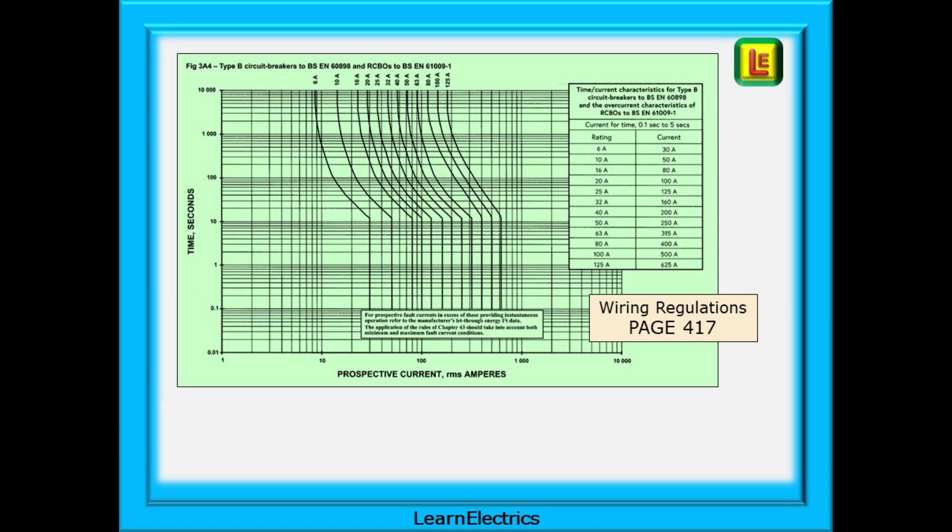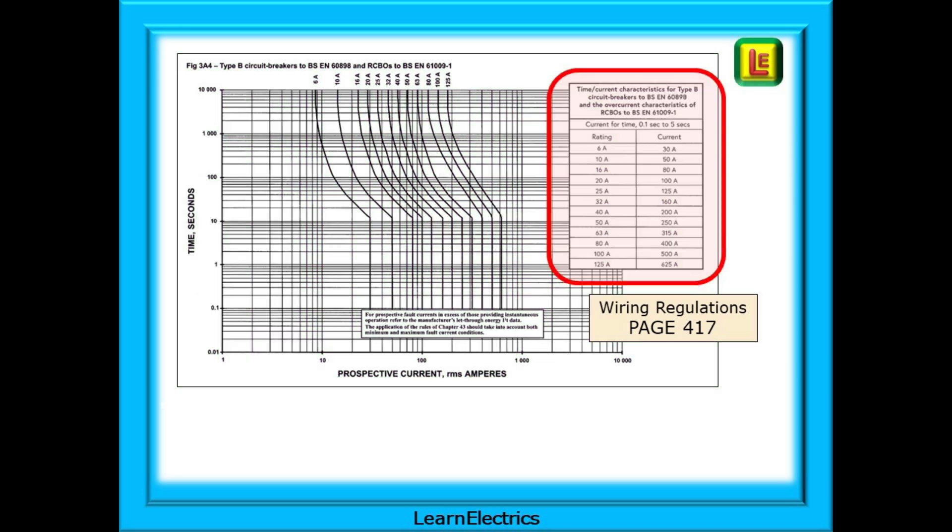On page 417 of the wiring regs you will find this chart called figure 3A4 which is for the type B circuit breakers to BS EN 60898 and RCBOs to BS EN 61009. Each breaker type and fuse type in current use will have a page in Appendix 3. We're interested in the chart at the top right.